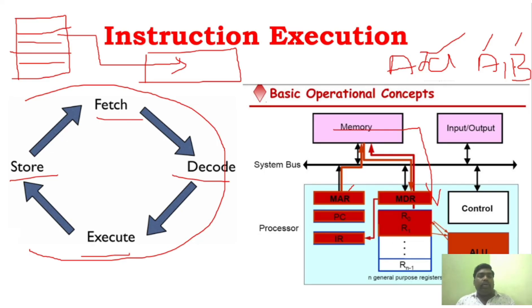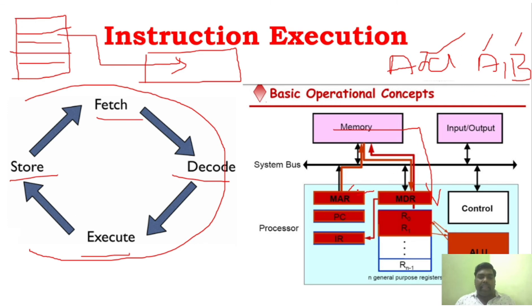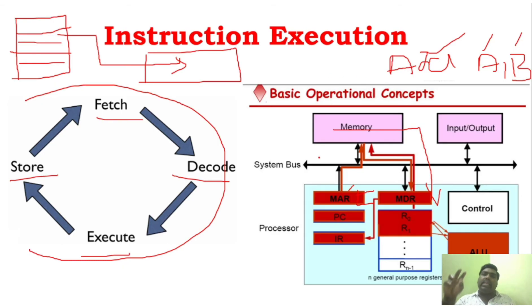After the ALU performs the operation and returns the result, the processor will either send the result to the output device or, if you want to store the information, it will send the result along with the address location back to the MAR. MAR will then store the result in the given address location in memory. This completes the basic operational cycle.